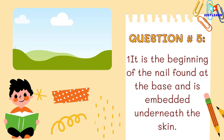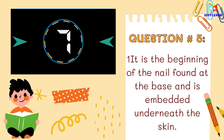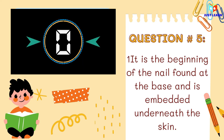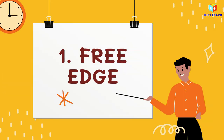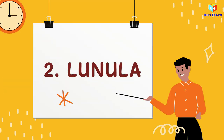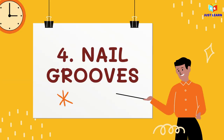Number 5: It is the beginning of the nail found at the base under the skin. Let us see if your answers are correct. Number 1: Free edge. Number 2: Lunula. Number 3: Nail walls. Number 4: Nail grooves. And number 5: Nail root. I am hoping that you got all the answers correct.